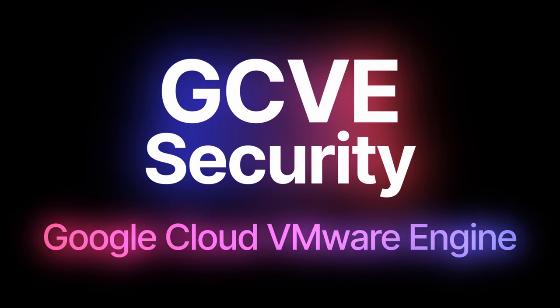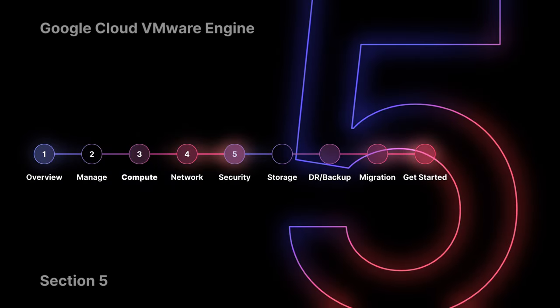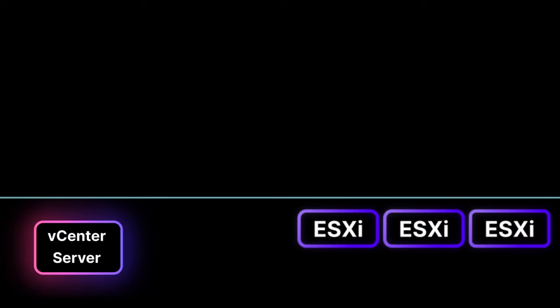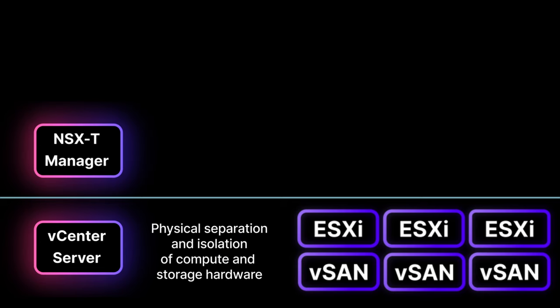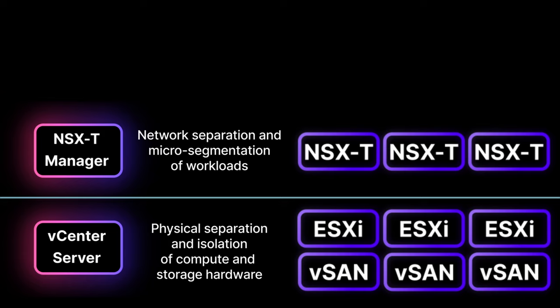Hi, I'm Jason Mears and this is a short overview of Google Cloud VMware Engine. As part of the VMware Engine service, all customers get dedicated bare metal hosts with local attached disks that are physically isolated from other hardware. An ESXi hypervisor with vSAN runs on every node. The nodes are managed through a customer-dedicated vCenter server and NSX-T manager.